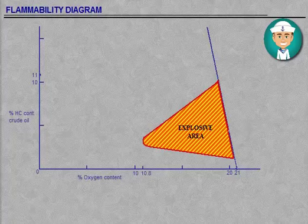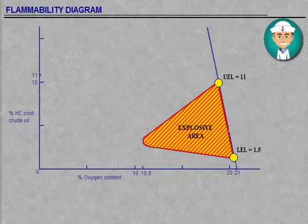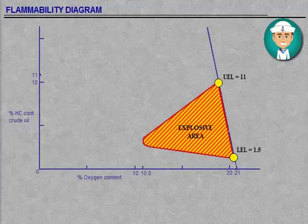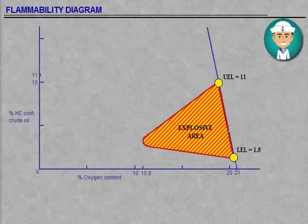The example flammable diagram is for hydrocarbon gas above crude oil where the UEL is 11% and the LEL is 1.5%. The left side of the diagram, vertical axis, gives the hydrocarbon gas value. The bottom line of the diagram, horizontal axis, represents the oxygen content from 0 to 21%.